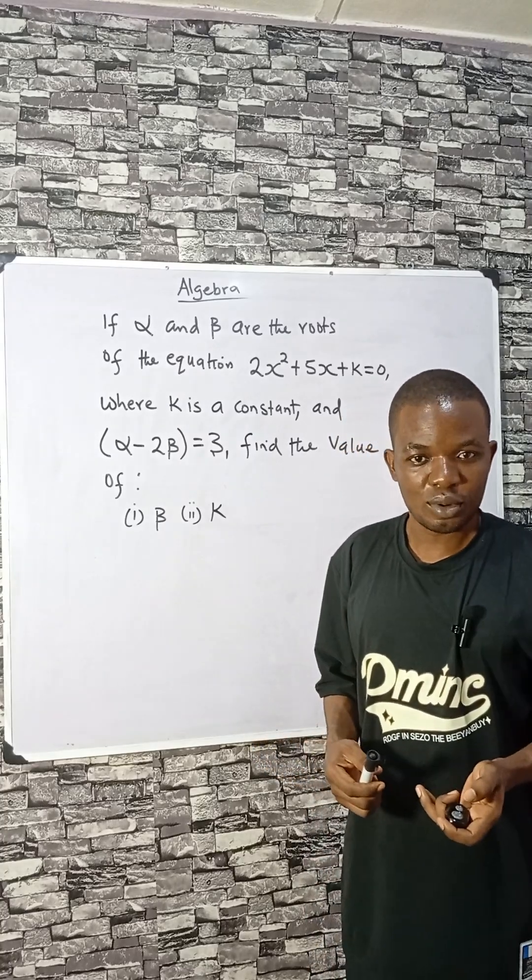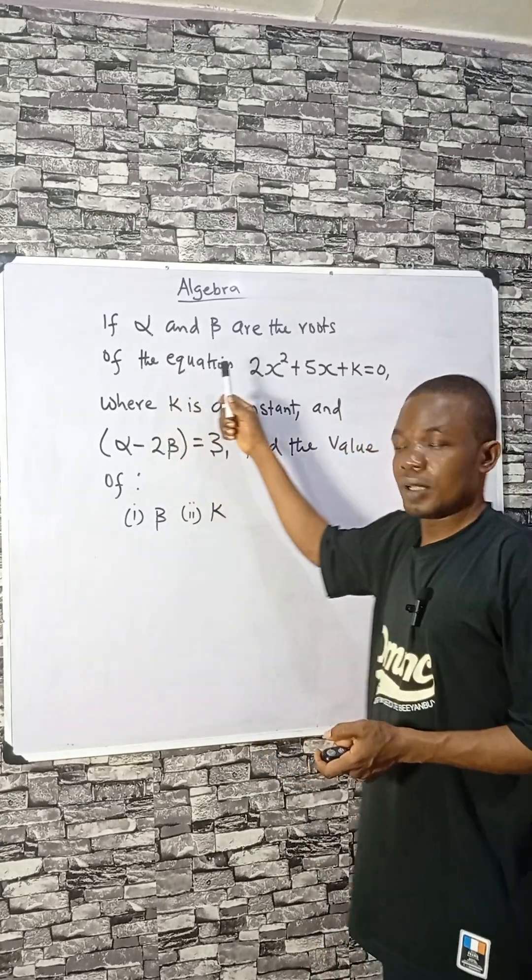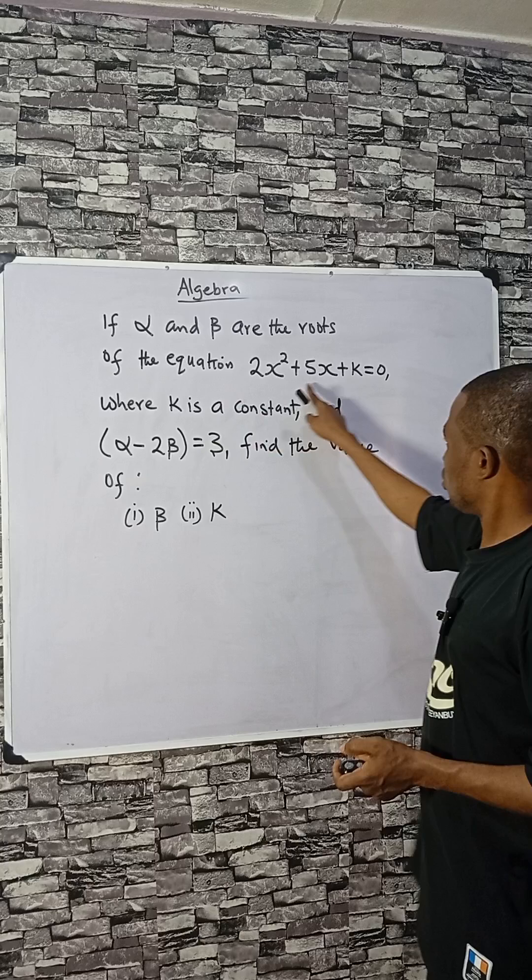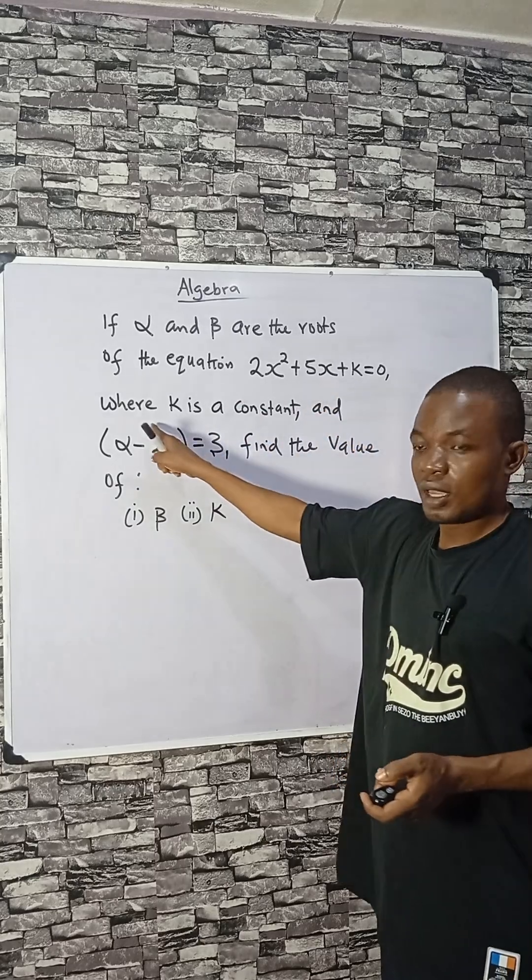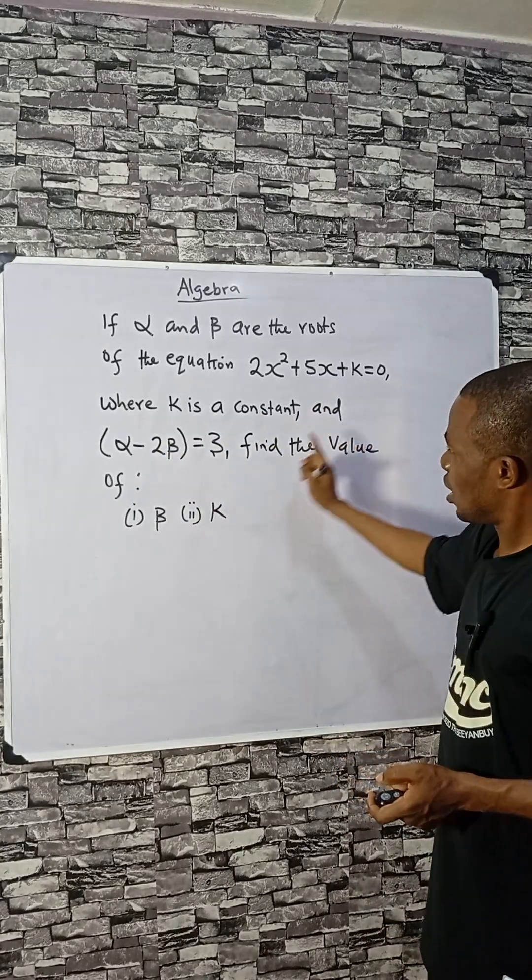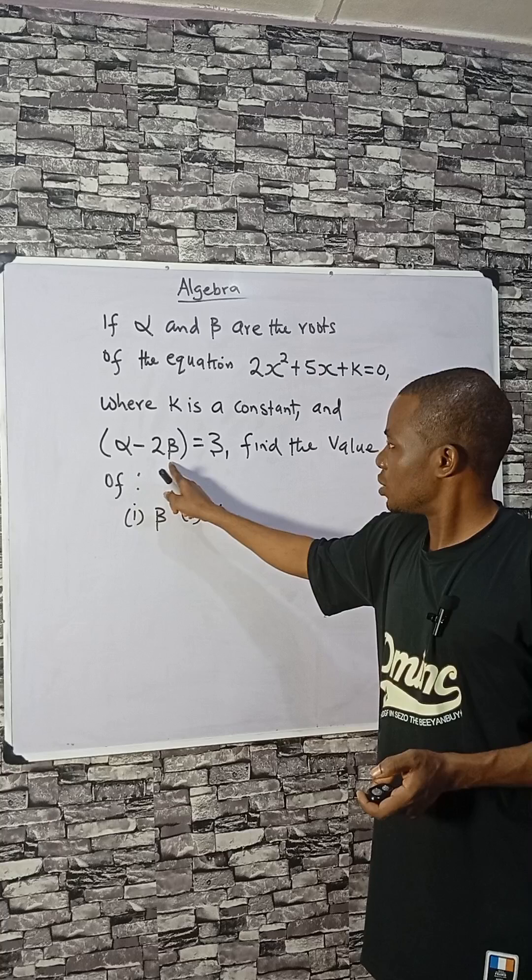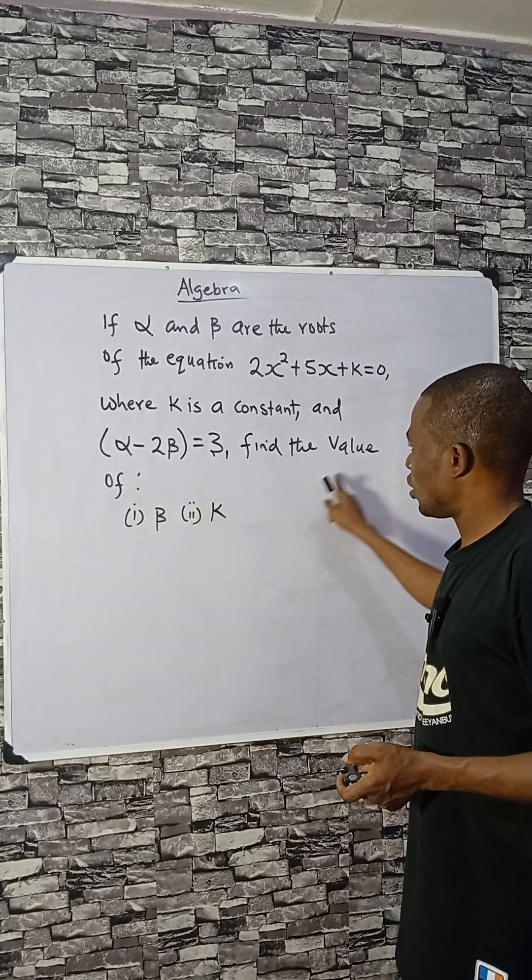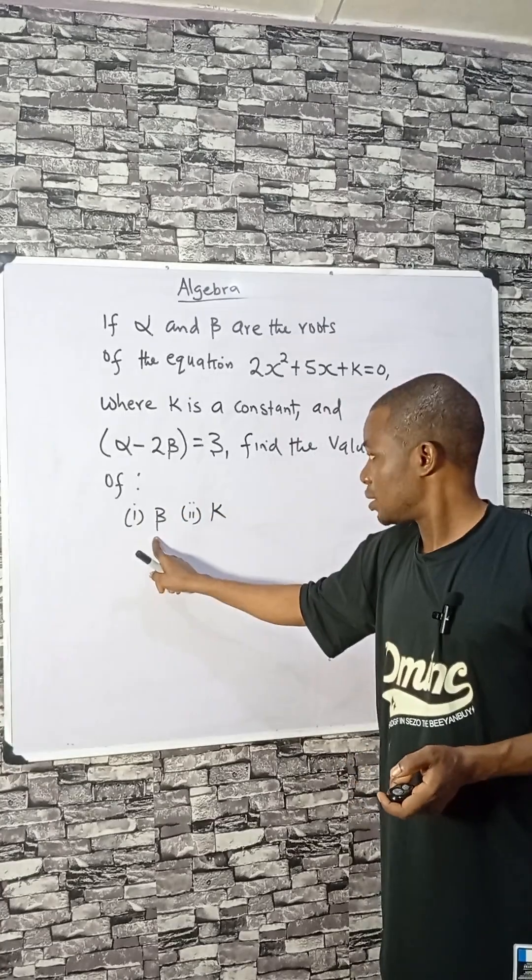Let's consider this algebra problem on the board. If alpha and beta are the roots of this equation, where k is a constant and alpha minus 2 beta equals 3, find the value of alpha, beta, and k being the constant.